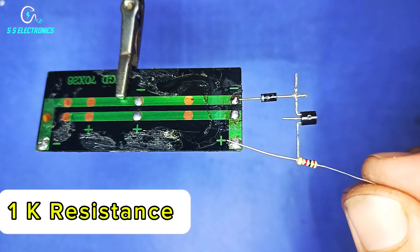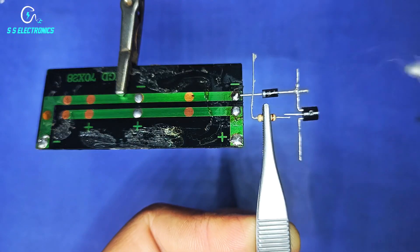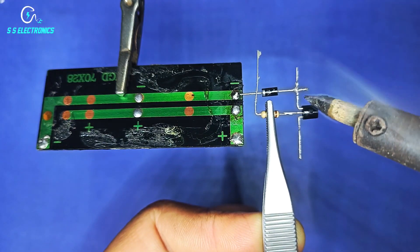1K resistance. Resistance one side connecting with transistor base pin and other side connecting with diode negative side.